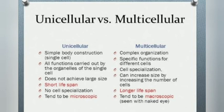Unicellular organisms have a very small size, whereas multicellular organisms have a large size. Unicellular organisms have a short lifespan, whereas multicellular organisms have a longer lifespan compared to unicellular organisms.